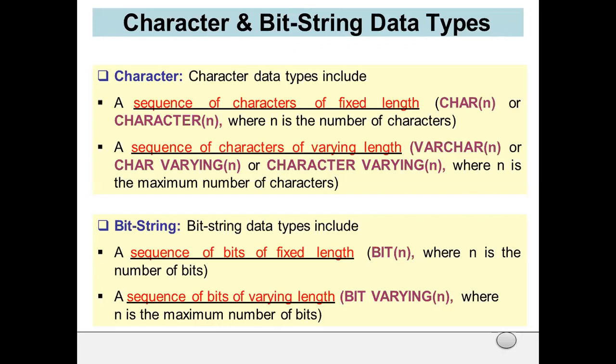Next is the bit string. Bit string data type includes a sequence of bits of fixed length BIT(n), where n is the number of bits, and a sequence of bits of varying length, BIT VARYING(n), where n is the maximum number of bits. Similar to character and varchar, in bit string if it is static or fixed length, we use BIT(n), and if it is of varying length, we use BIT VARYING(n).